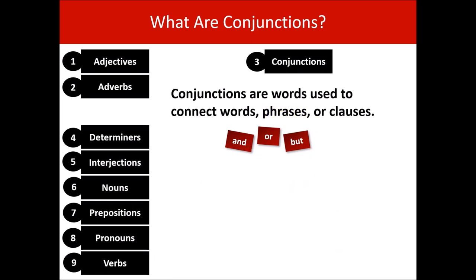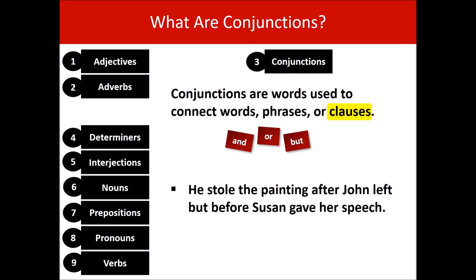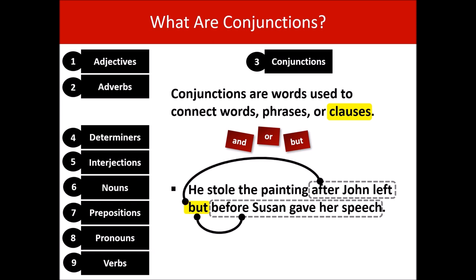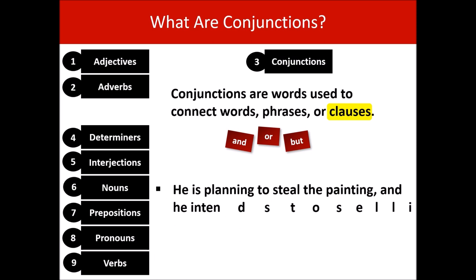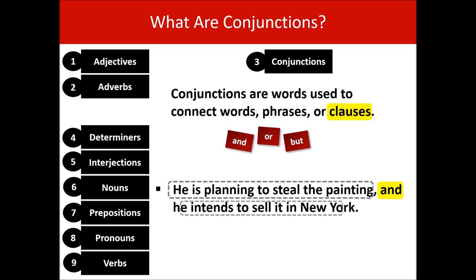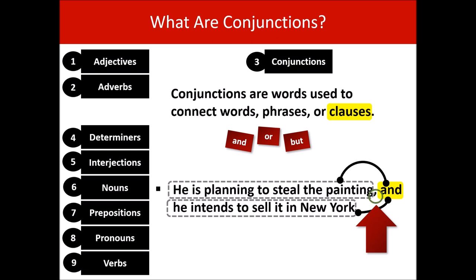Let's see how conjunctions join clauses. He stole the painting after John left but before Susan gave her speech — 'but' is our conjunction. 'After John left' is a clause, 'before Susan gave her speech' is a clause, and the conjunction joins them. He is planning to steal the painting and he intends to sell it in New York — these are independent clauses, meaning they could stand alone as sentences. When a conjunction joins two independent clauses like this, the conjunction is preceded by a comma.